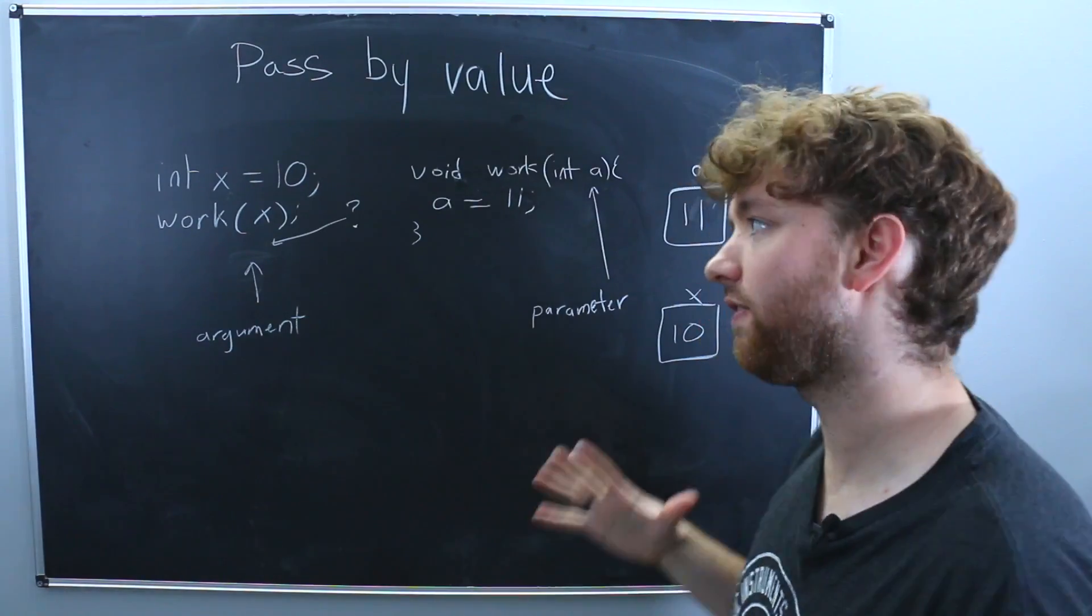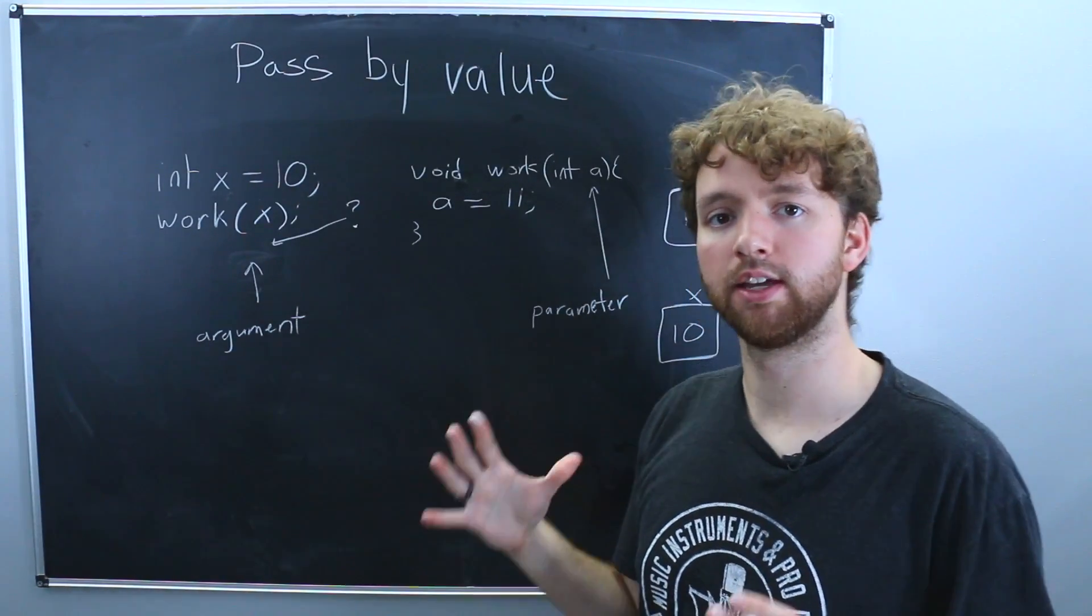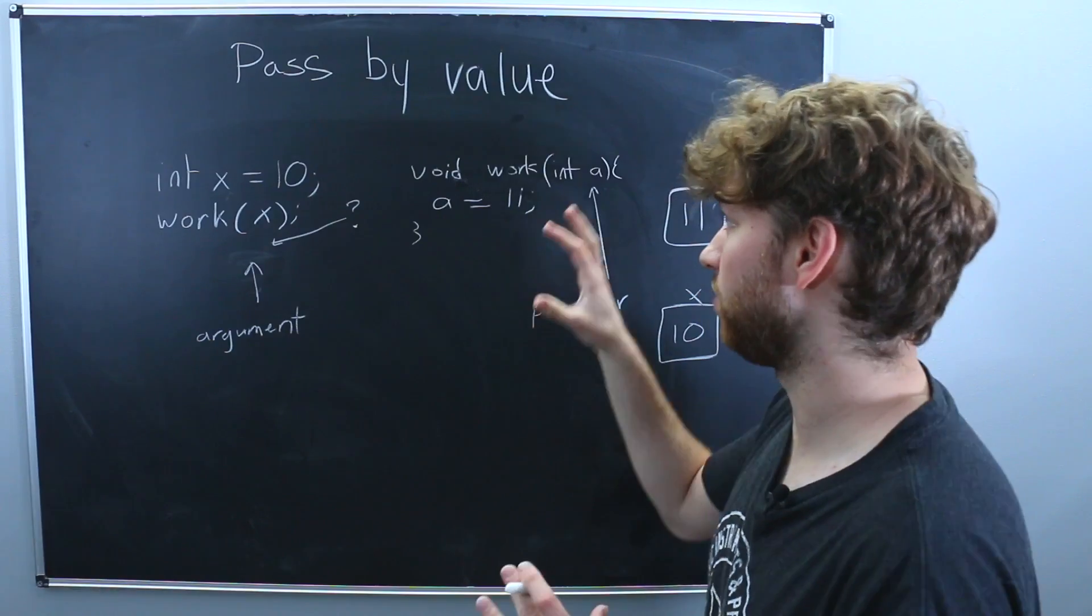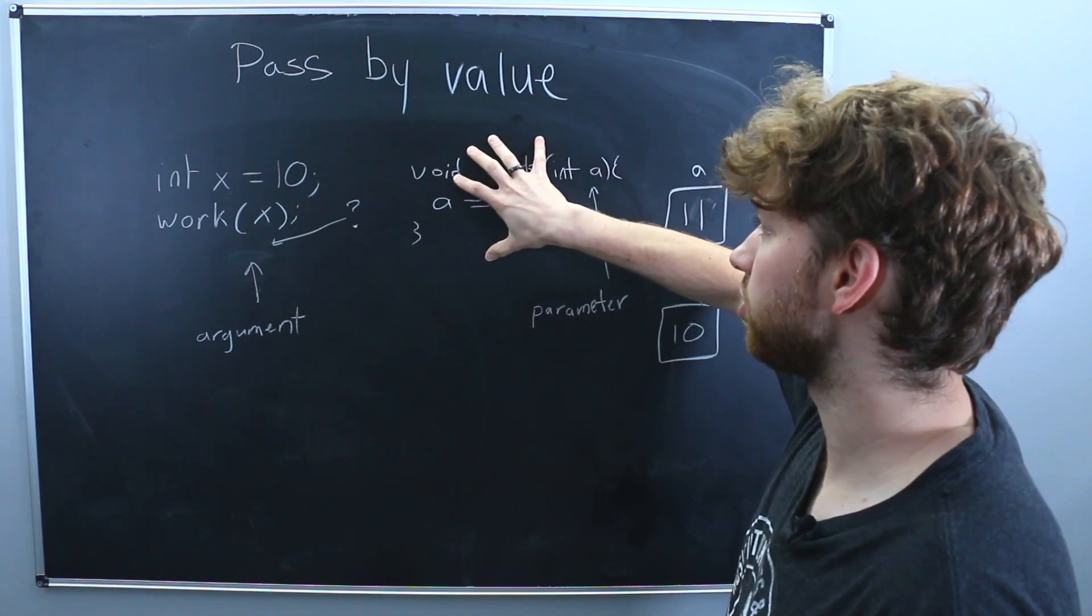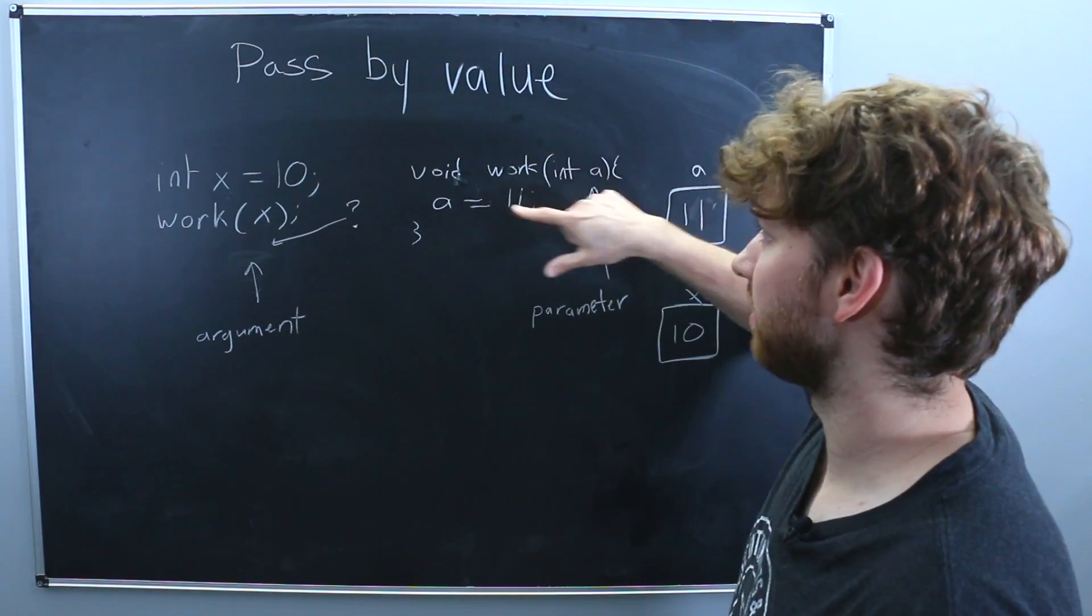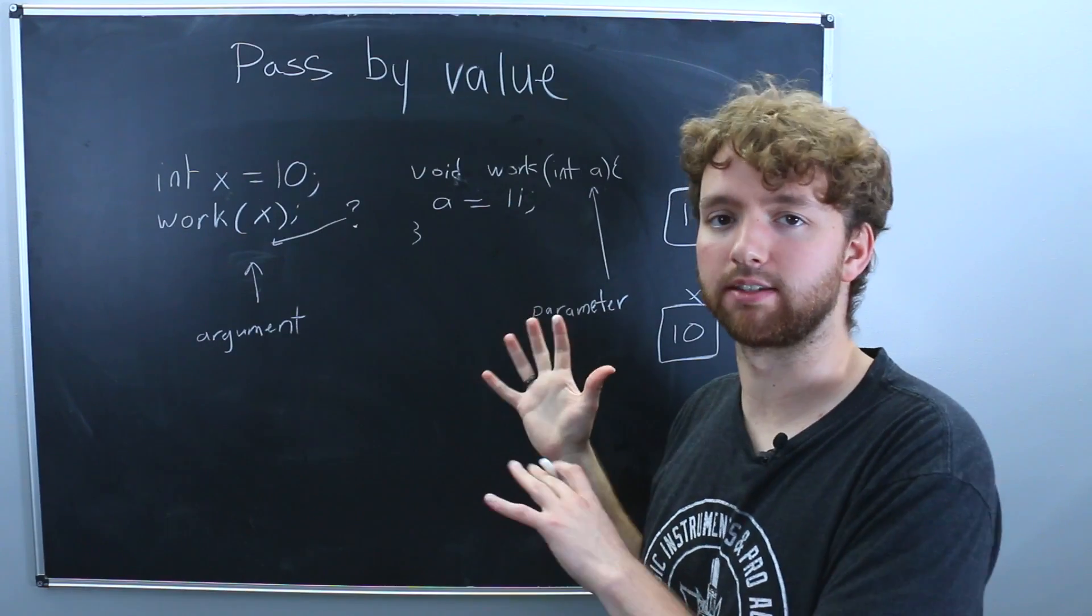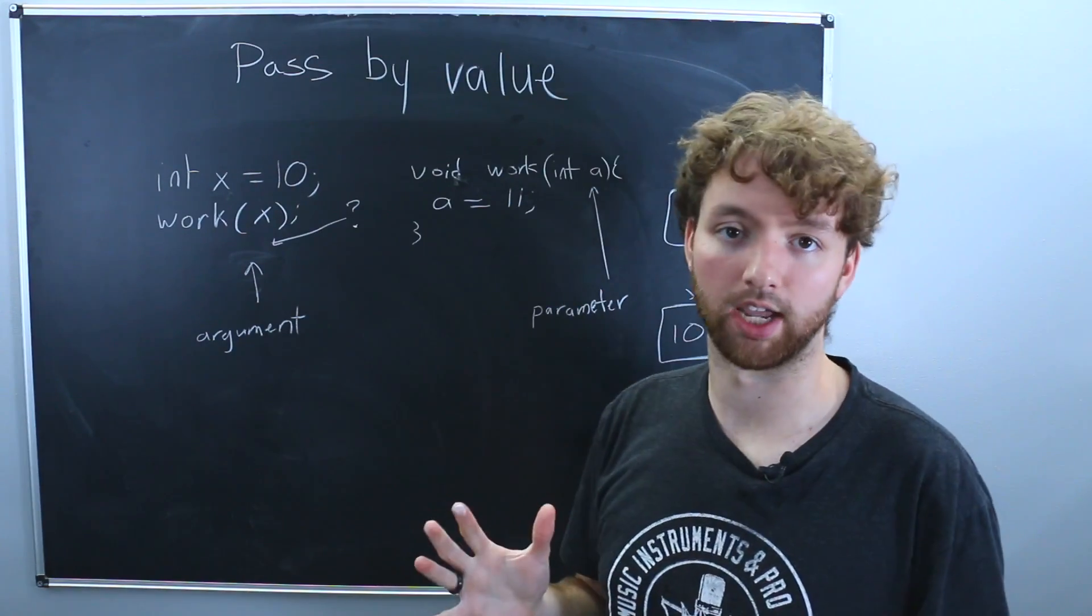That is how pass by value works. It copies everything, which is usually fine for the majority of cases. And it's actually safe, because we know that if this function is passed by value, then it's not going to accidentally change any of our data.